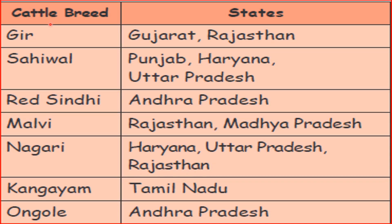GYR is from Gujarat and Rajasthan. SAGIWAL is from Punjab, Haryana and Uttar Pradesh. RED SINTHI is from Andhra Pradesh. MALIBI is from Rajasthan and Madhya Pradesh. NAGARI is from Haryana, Uttar Pradesh and Rajasthan. KANGAYAM is from Tamil Nadu. ARNKOL is from Andhra Pradesh and Tamil Nadu.